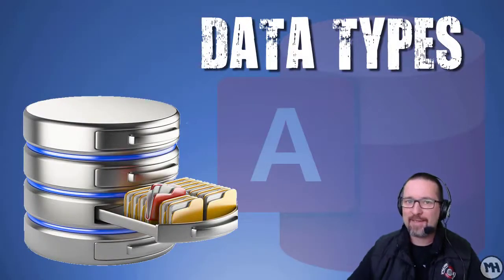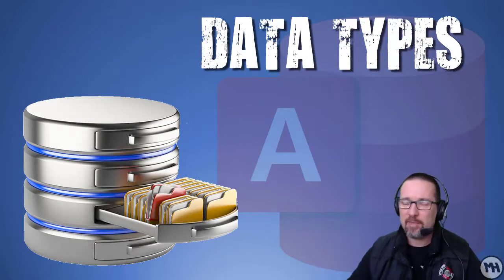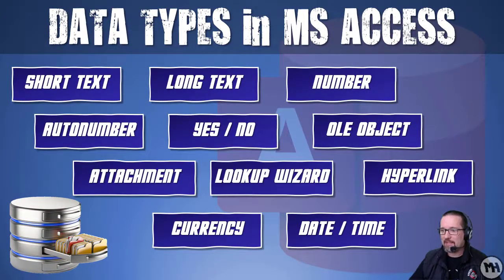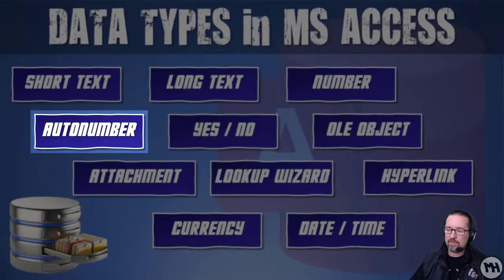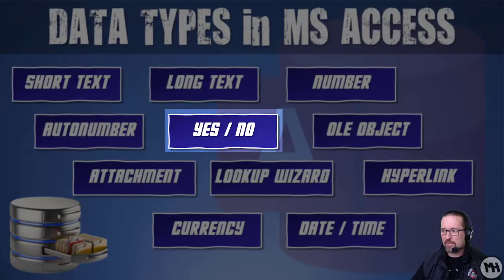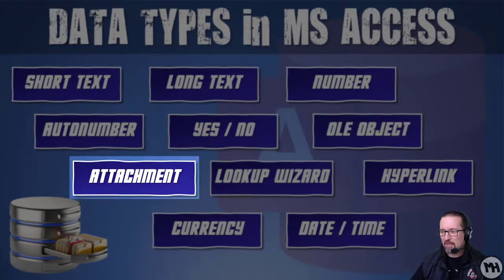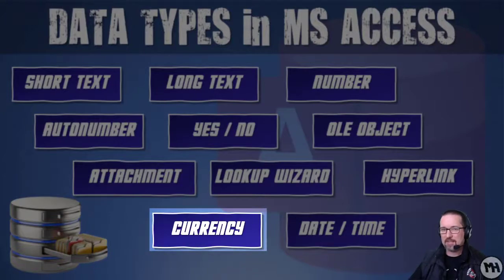Working in Microsoft Access, you're going to come across various data types. Each field can hold a specific type of information. Let's have a look at the various data types in Microsoft Access: short text, long text, number, auto number, yes/no, OLE object (which means object linking and embedding), attachment, lookup wizard, hyperlink, currency, and date and time.